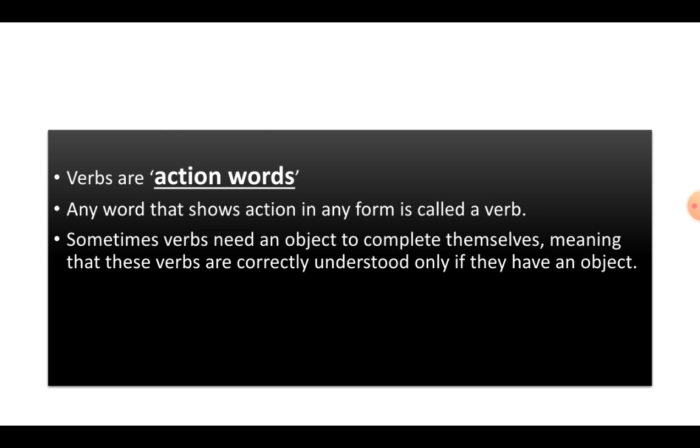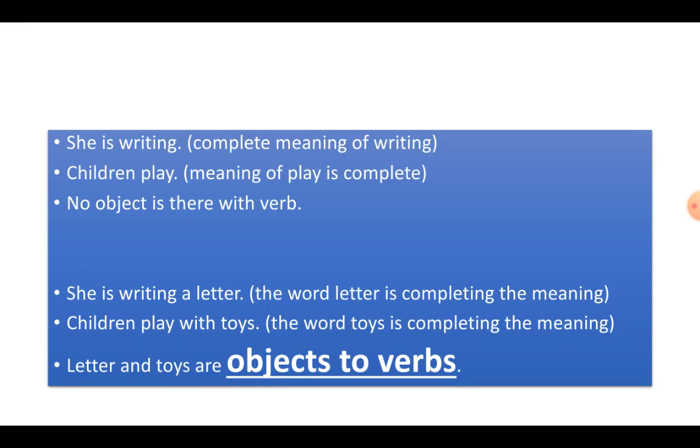Try to understand. The meaning of the verb becomes clear or why the verb is used becomes clear only when there is an object to it. Object, you know, anything. Let's understand with examples. If I say, she is writing. Writing what? Neither I know nor I need to know because meaning is getting complete here. She is writing.